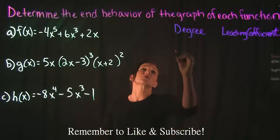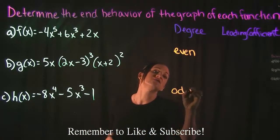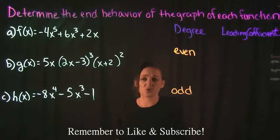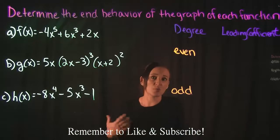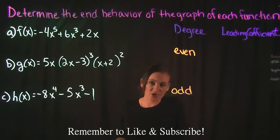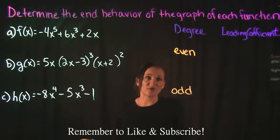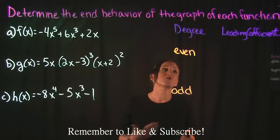We first want to look at the degree of the function and we want to know: is it an even or odd degree? When we talk about the degree, we're talking about the highest power of the function. If it's a 1, 3, 5, 7, 9, and so on, those are your odd functions. If it's 2, 4, 6, 8, and so on, those are your even functions.